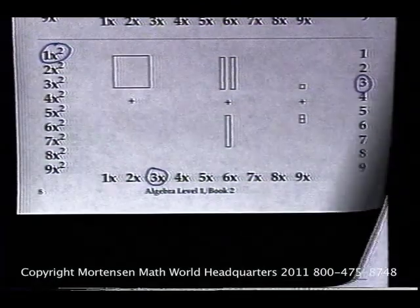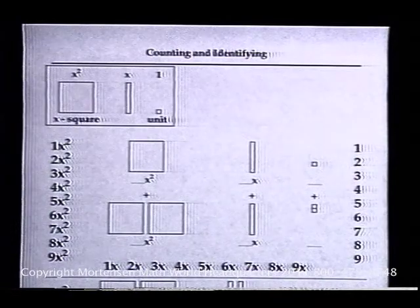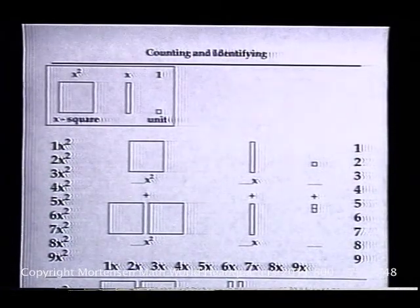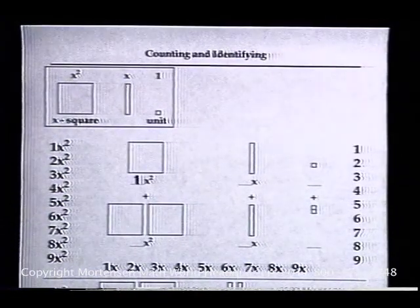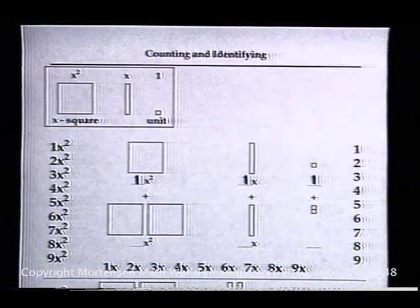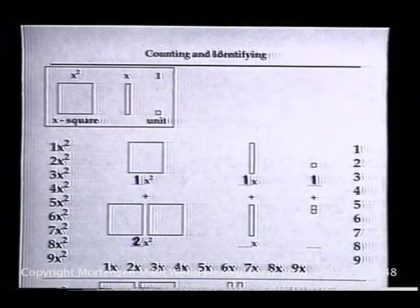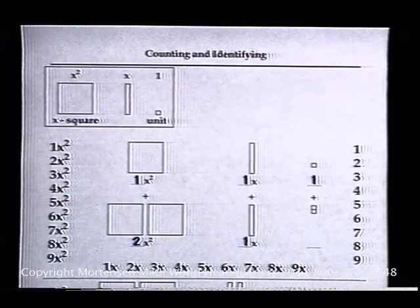On the top of page 12, we see the following picture. First, we write how many of each kind. Top row would be one X-square, one X, and one unit. Bottom row would be two X-squares, one X, and two units.